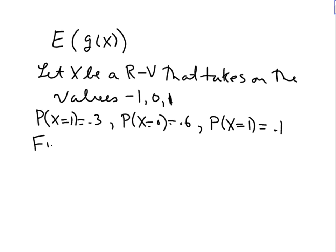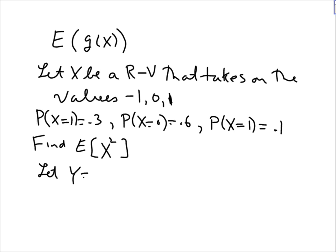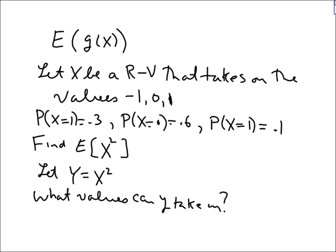We want to find the expected value — not of X itself, but a function of X: X squared. Find E[X²]. One way of doing this is to say, let Y equal X squared. So what values can Y take on? If X is negative one and you square it, Y would be one. If X is zero and you square it, it's still zero. And if X is one and you square it, Y can be one, which is already covered.